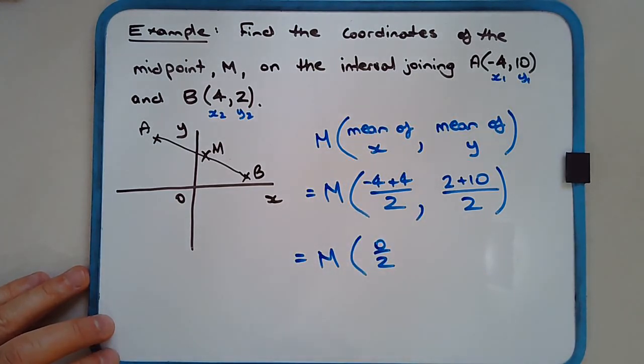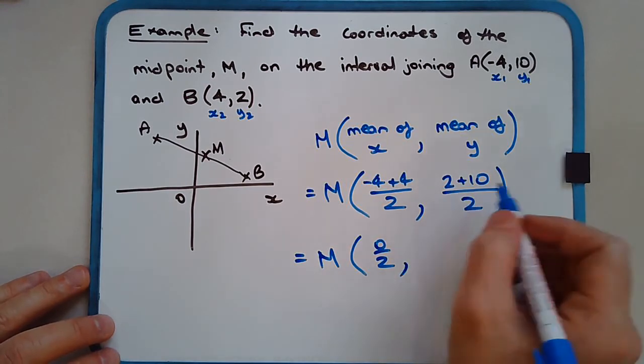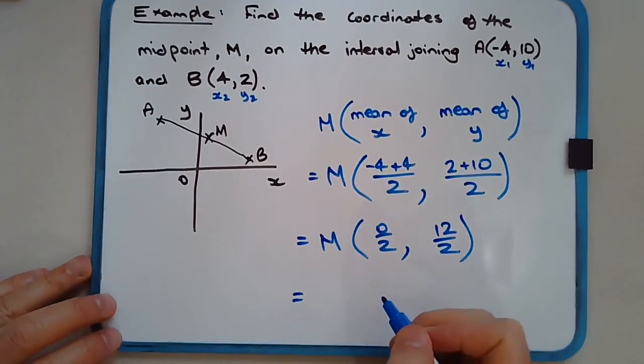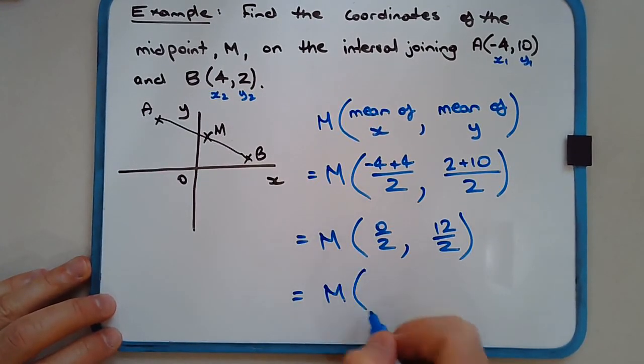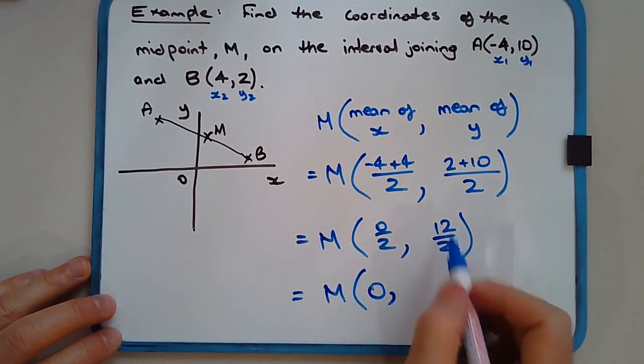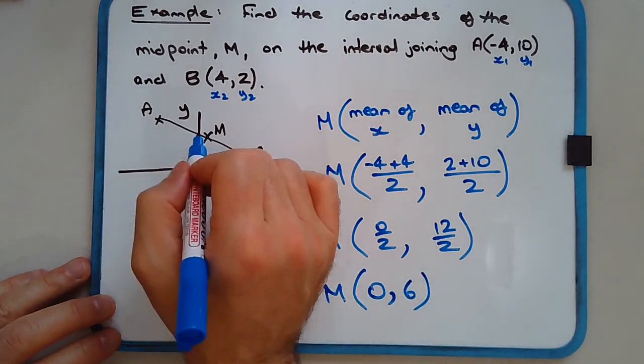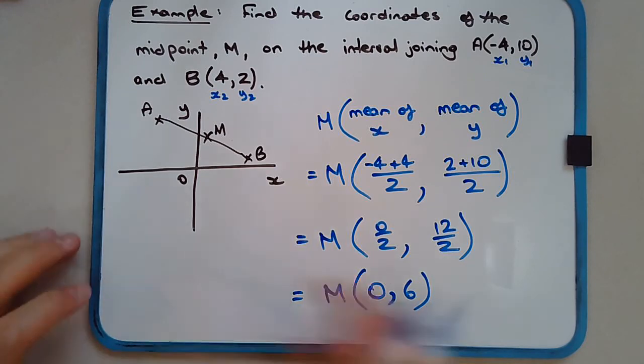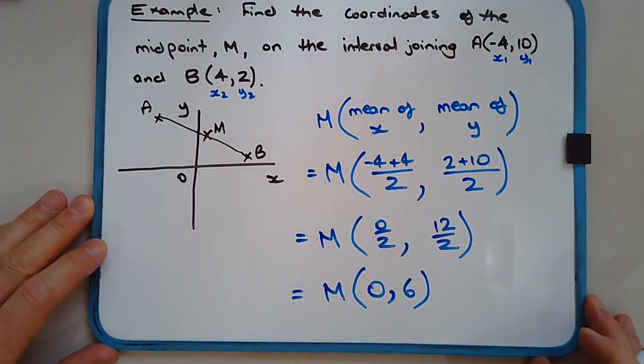Finally, 0 comma 12 over 2 is 6. So in fact the midpoint is a point on the y-axis, and that's how we find the midpoint on an interval.